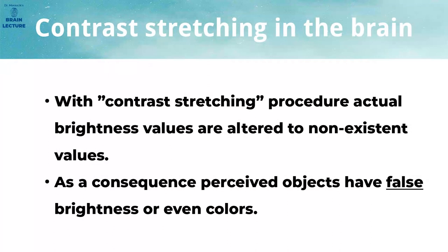By changing contrast in the image, you always alter brightness values of single pixels. If you are working with color images, then you are altering the colors as well, because every color is defined by several color channels that represent brightness values for that channel. It is important to stress that after changing contrast, the resulting brightness values and colors will be different from the original values. So the procedure of adjusting contrast always produces false brightness and color values. With this theory explained, we can start with the first example.